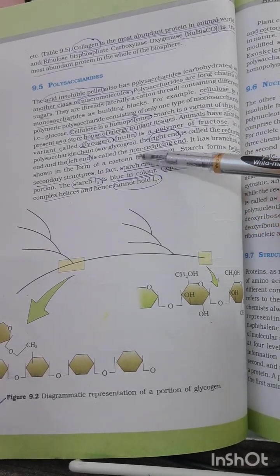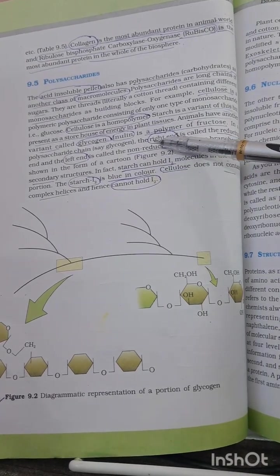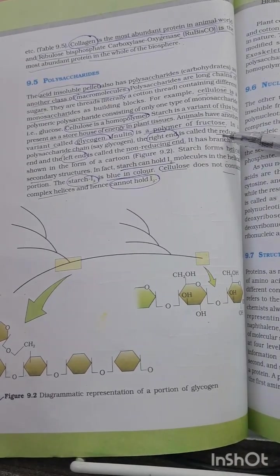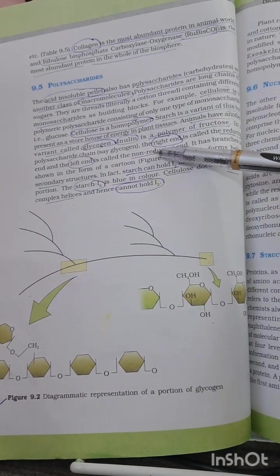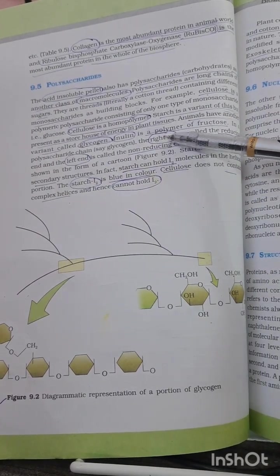Glycogen right end is reducing. You have to remember like this: R-R, right end is reducing and left end is non-reducing. You have to remember this as well and should not get confused when the question is asked in your examination.